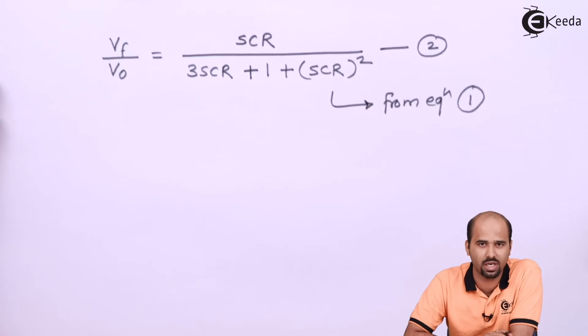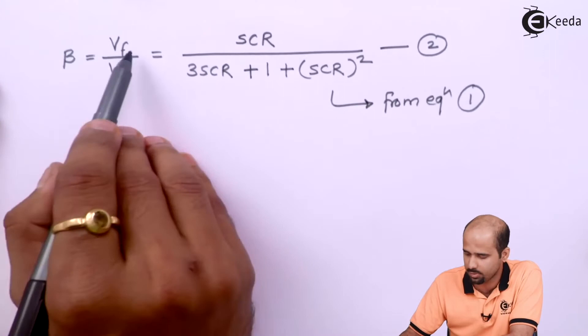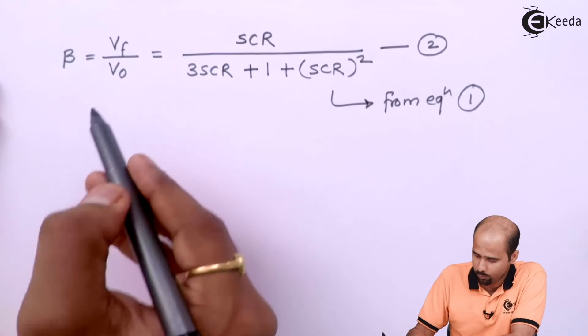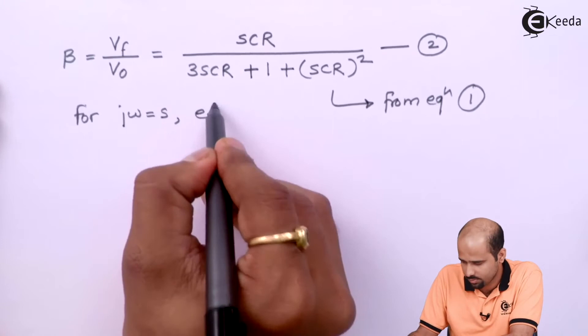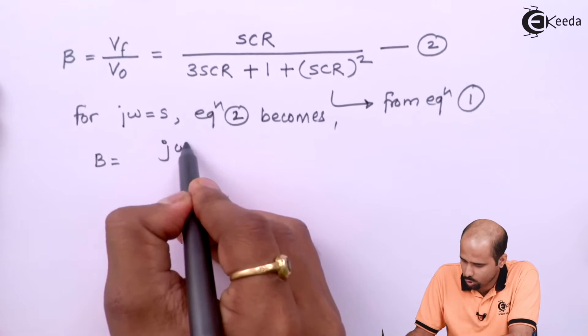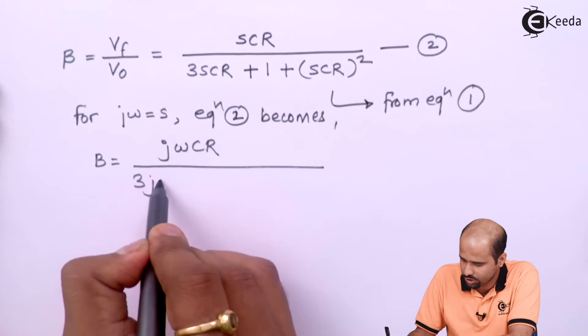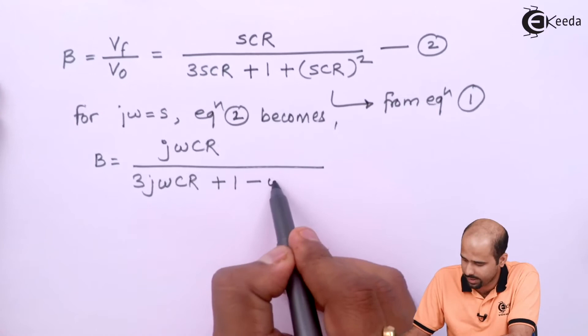For BJT, VF upon VO is the feedback gain B, equal to SCR divided by 3SCR plus 1 plus (SCR)². Now substituting S equal to jω, B becomes jωCR divided by 3·jωCR plus 1 minus ω²C²R², since S² equals (jω)² gives minus ω²C²R².